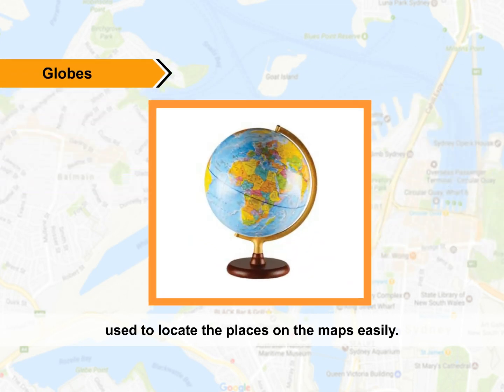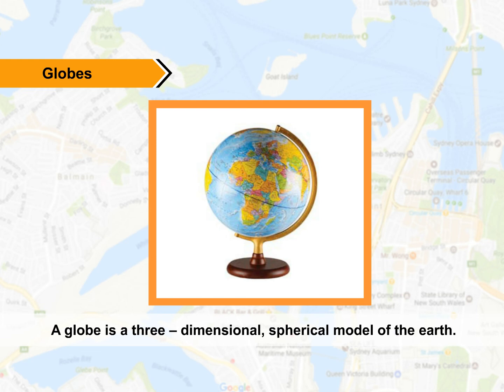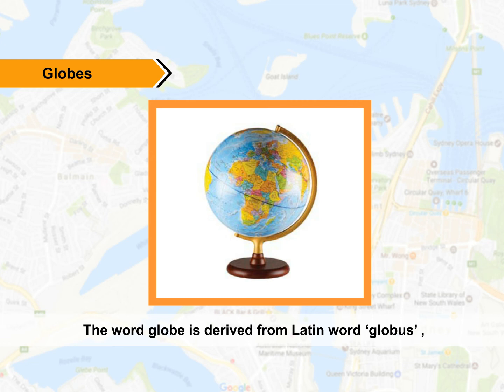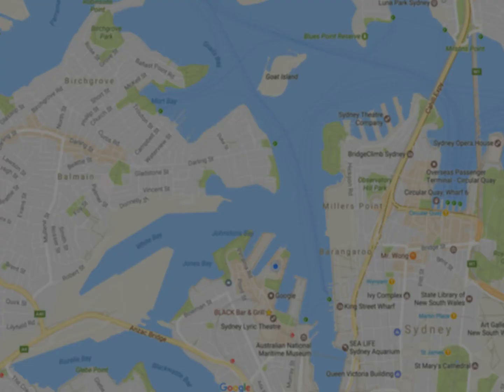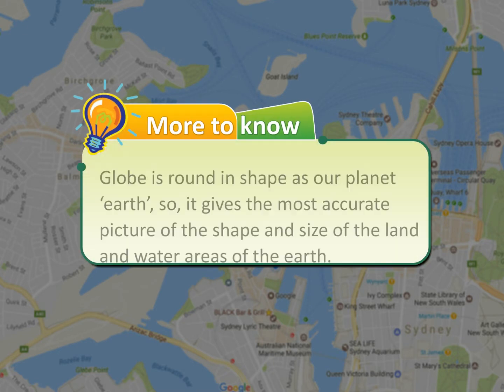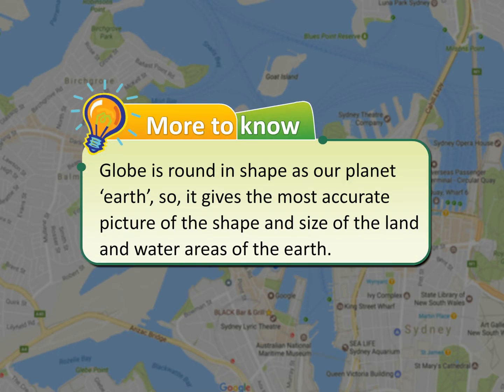Globes: A globe is a three-dimensional, spherical model of the earth. The word globe is derived from the Latin word 'globus', which means round mass or sphere. All the geographical features are depicted on a globe. A globe is round in shape like planet Earth, so it gives the most accurate picture of the shape and size of the land and water areas of the earth.